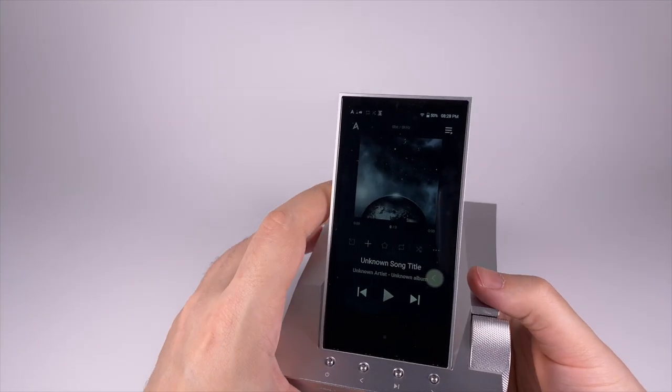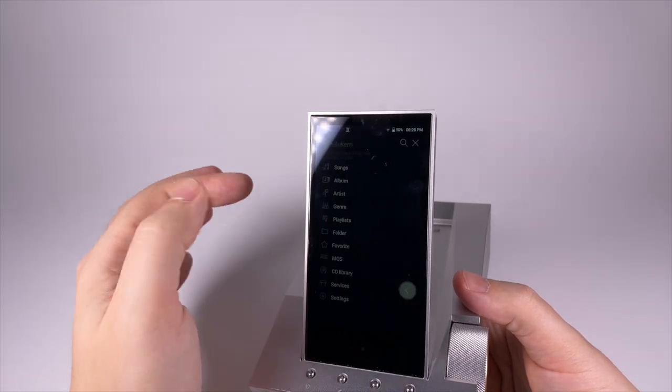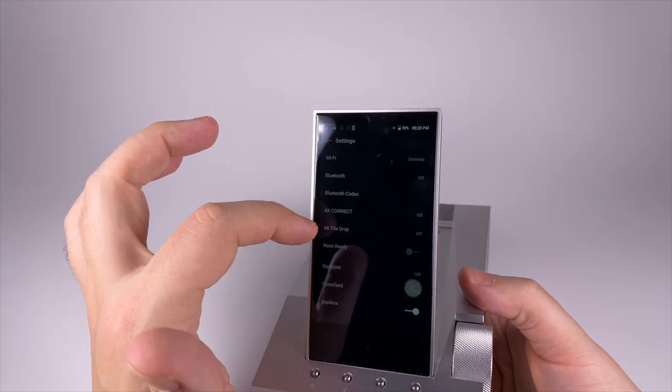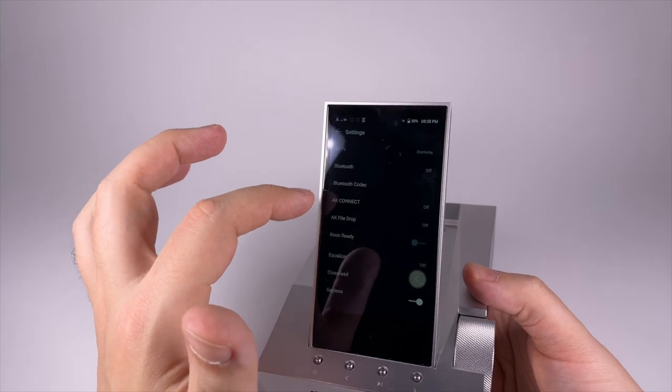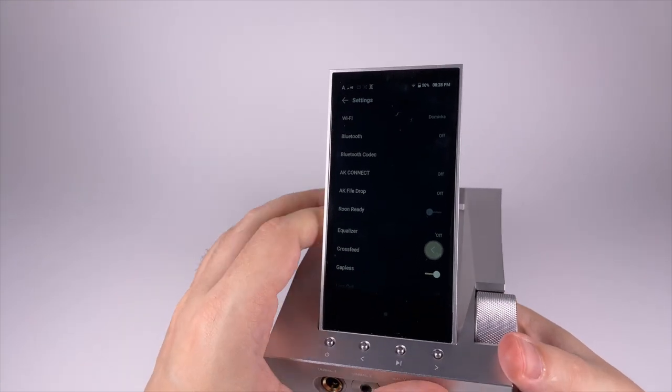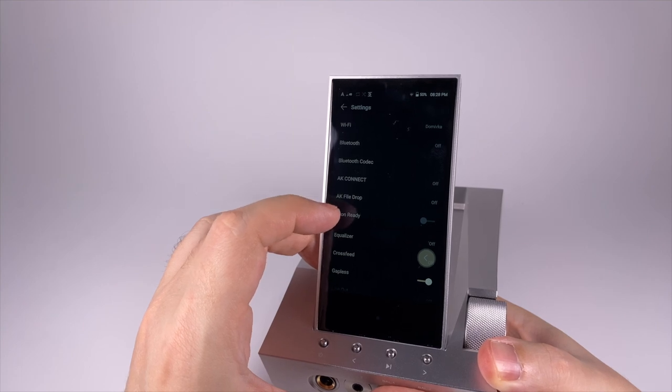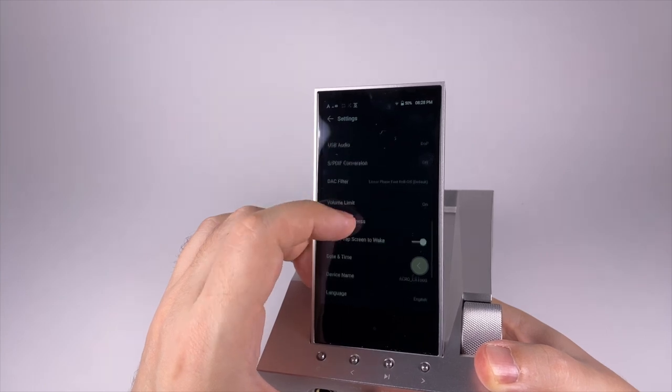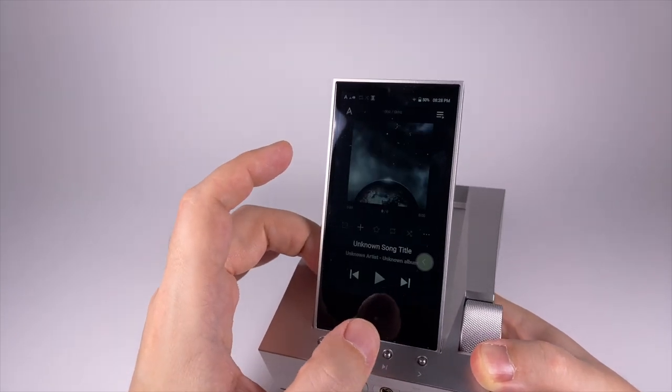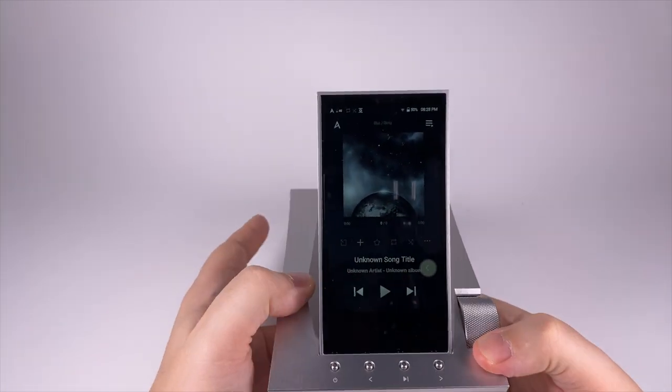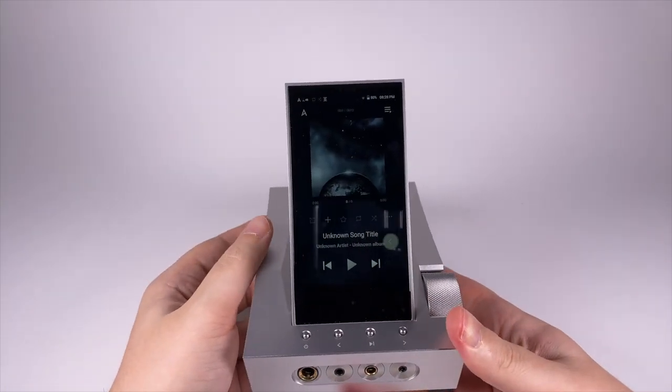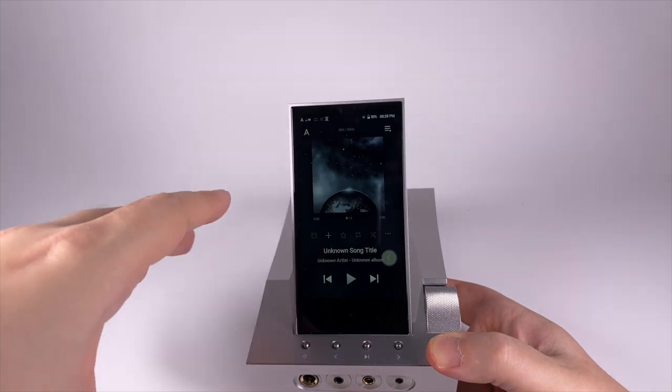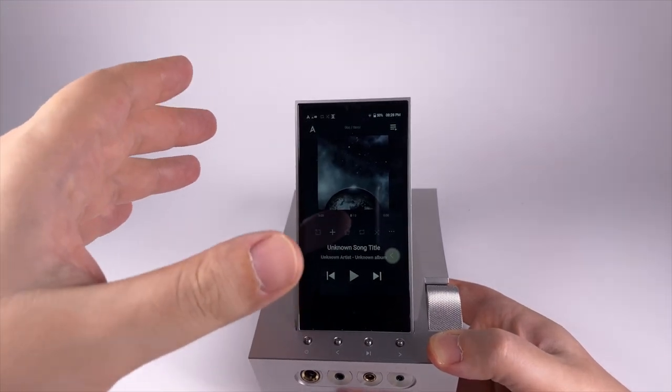In general, in terms of organization everything is similar to all Astell & Kern players. In the settings you can select some nice features like AK Connect that allows this device to integrate with other Astell & Kern devices in your network. Many people will find Roon Ready feature pretty convenient. A lot of people like organizing files and playback with Roon, so integrating this desktop device into Roon ecosystem will be a good idea.